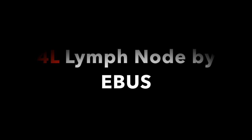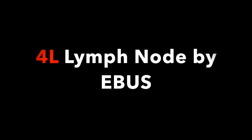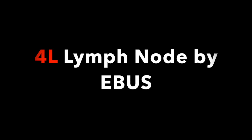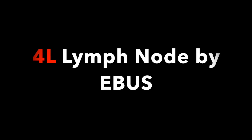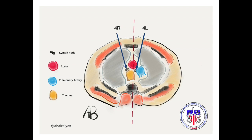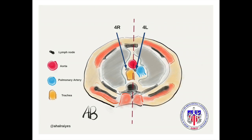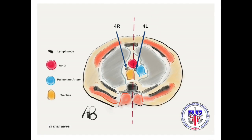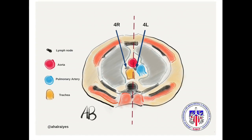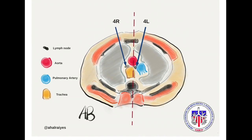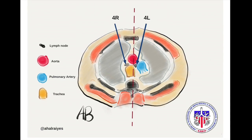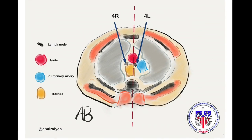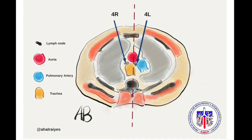The contralateral lymph node in this scenario includes the left paratracheal lymph node, which is 4L. It is very important for the operator to know the anatomic location of 4L, which is the left lateral wall of the trachea.